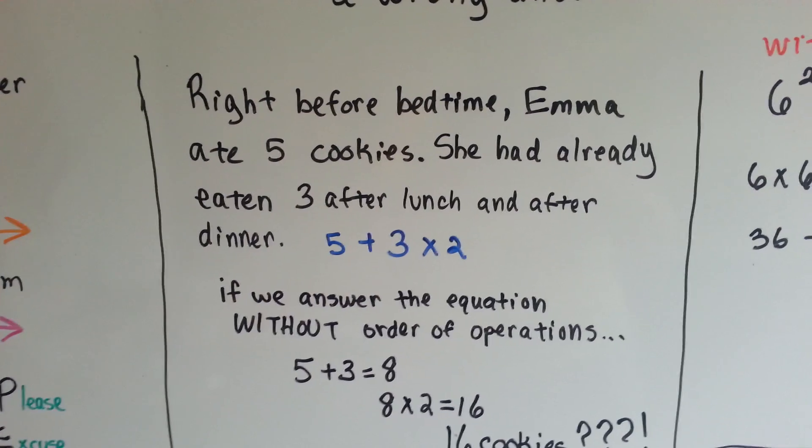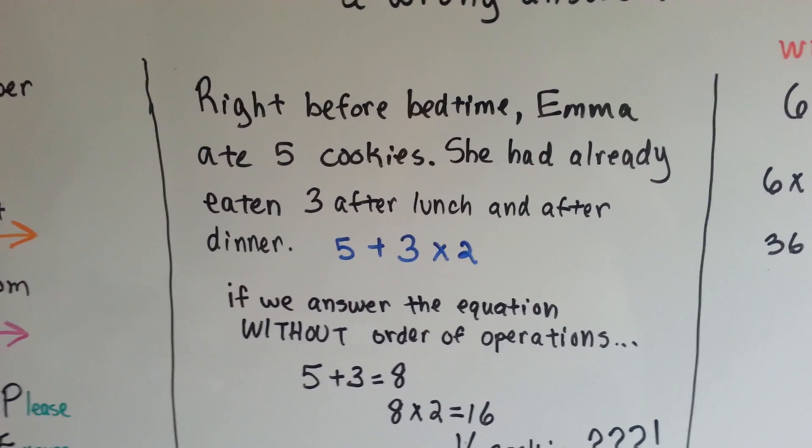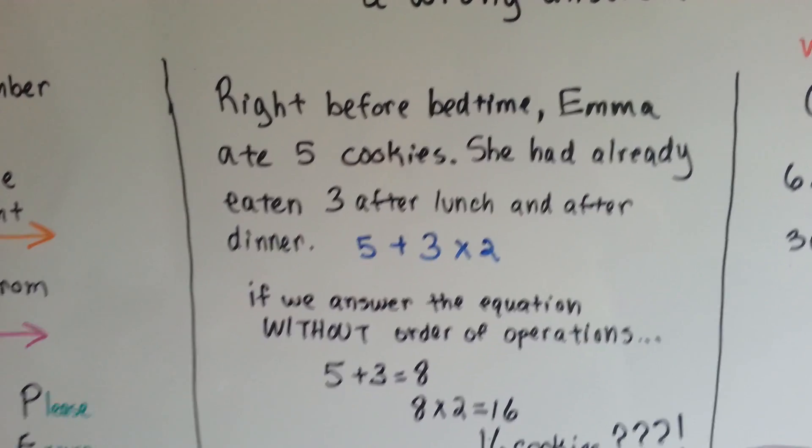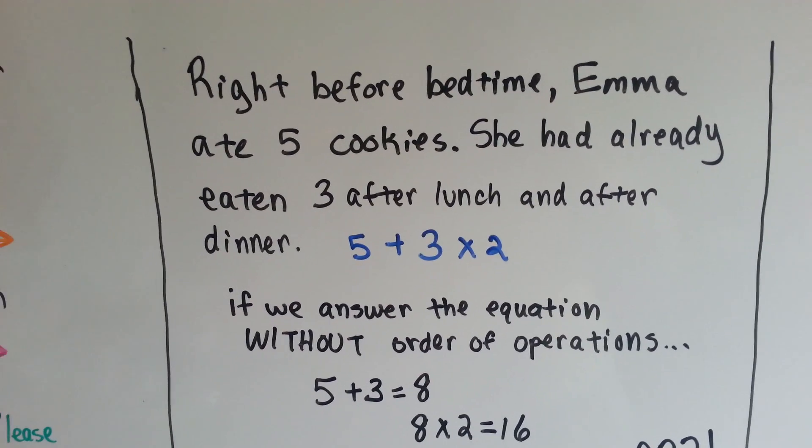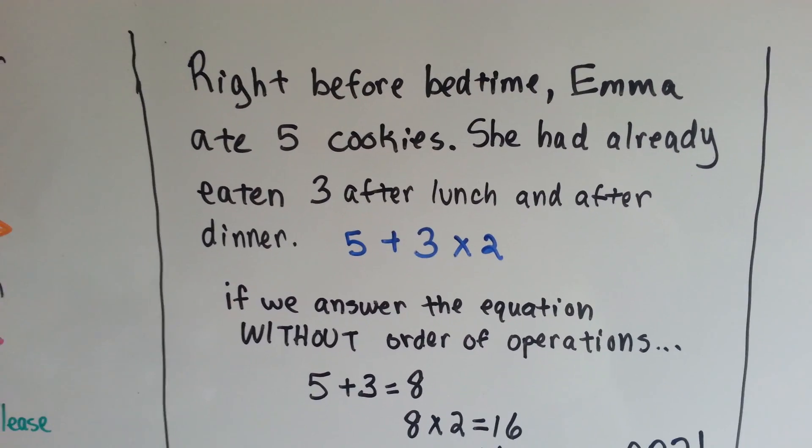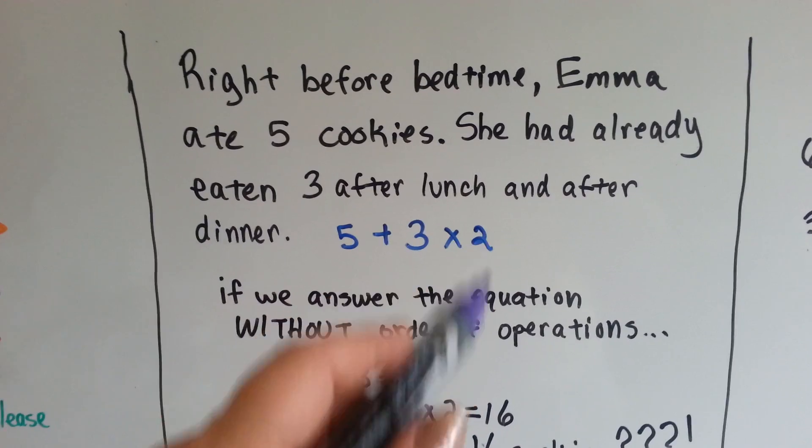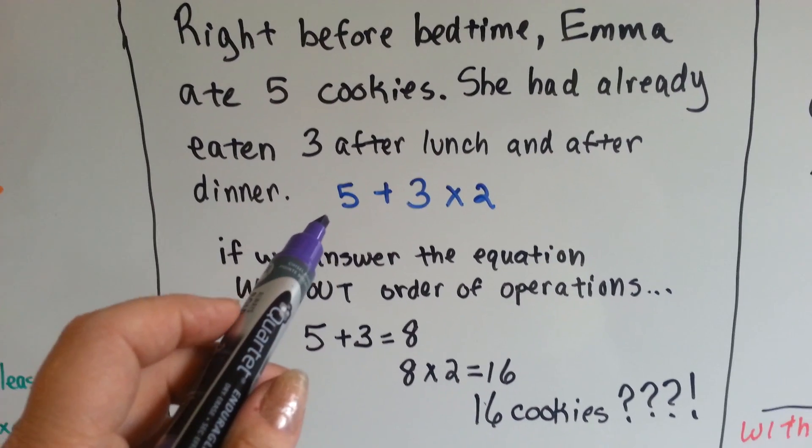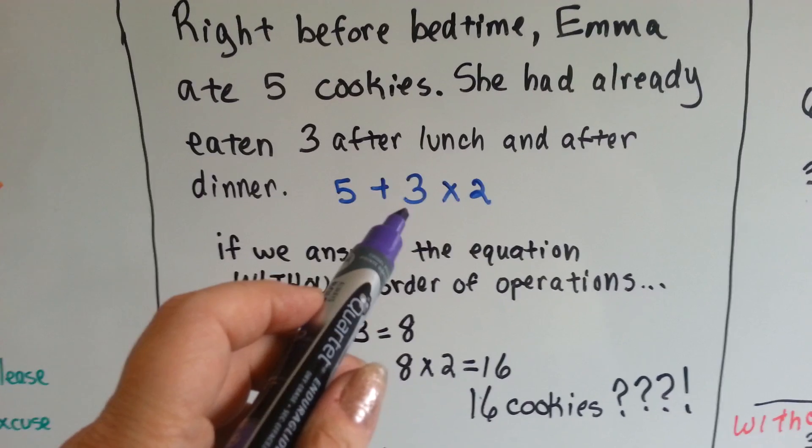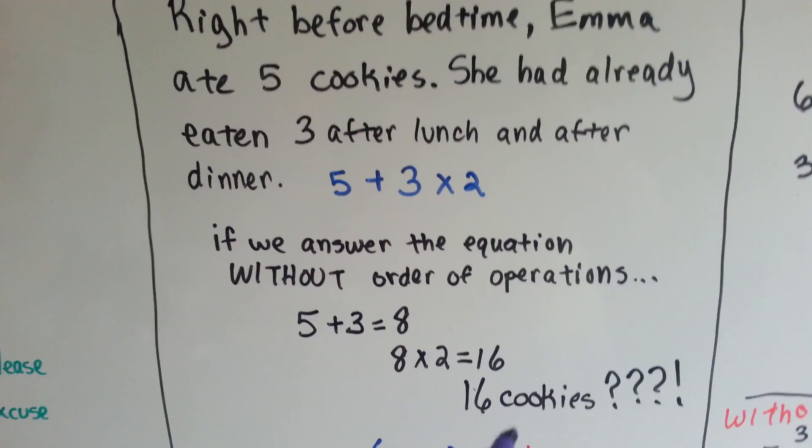Let's try writing this equation. Right before bedtime, Emma ate 5 cookies. She had already eaten 3 after lunch and after dinner. So, 3 times 2. Now, if we just answer it, we get 5 plus 3 is 8 times 2. That means she ate 16 cookies?